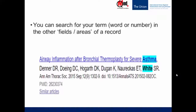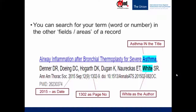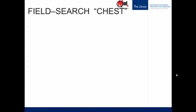For example, if this is one bibliographic record in PubMed, we could tell the search engine to look for the term 'asthma' in the title of the record. We could say, look for the word 'white' in the author area — because otherwise 'white' could be just a color, white cells, or white matter. We could ask for the number 1302 as the page number, or 2015 as the date of publication, and so on.